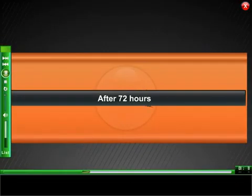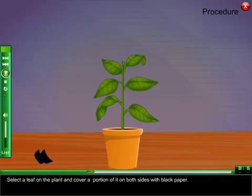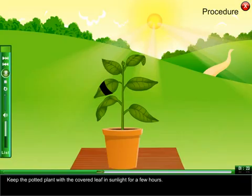After 72 hours, select a leaf on the plant and cover a portion of it on both sides with black paper. Keep the potted plant with a covered leaf in sunlight for a few hours.